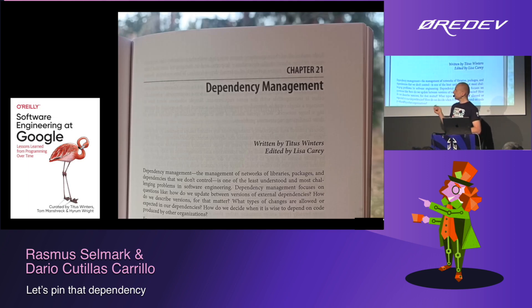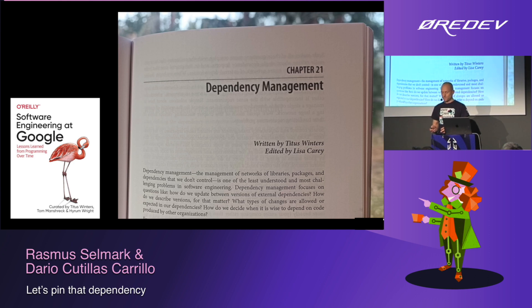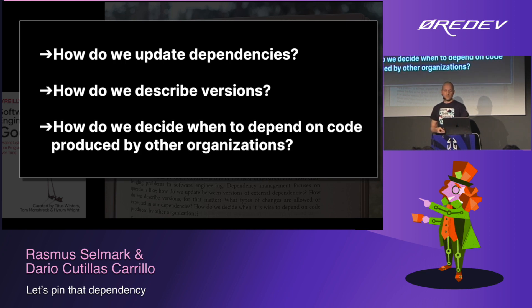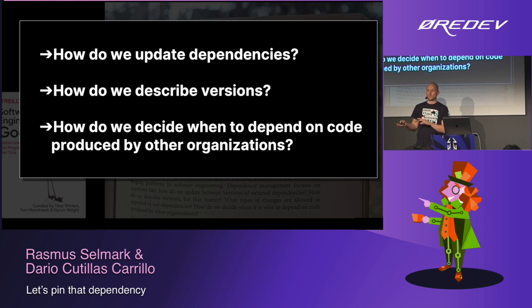When we talk about dependency management, I can recommend this book — Software Engineering at Google. It's a very good book on general software engineering, and they even have a chapter dedicated to dependency management. That chapter talks about things like how do we update dependencies, how do we describe versions of dependencies, and even how do we decide when it's safe to depend on code produced by other organizations. Our learning is that when your organization becomes large enough, other organizations can be somewhere within your own organization, and can even be something produced by your own team, but still considered a dependency.